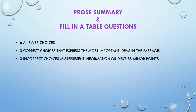In a Pro Summary Question there are six answer choices and you will need to select the three correct choices that express the most important ideas in the passage. The incorrect answer choices will misrepresent information in the passage or will discuss minor points.